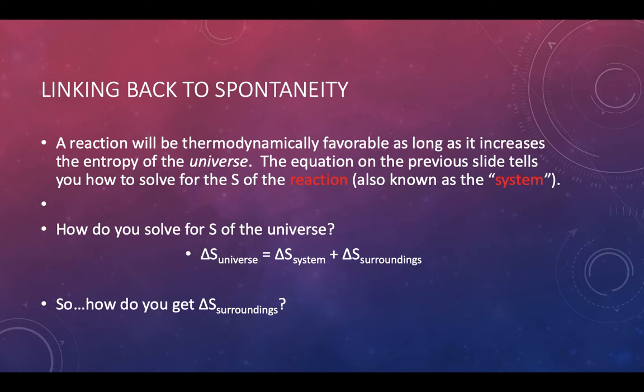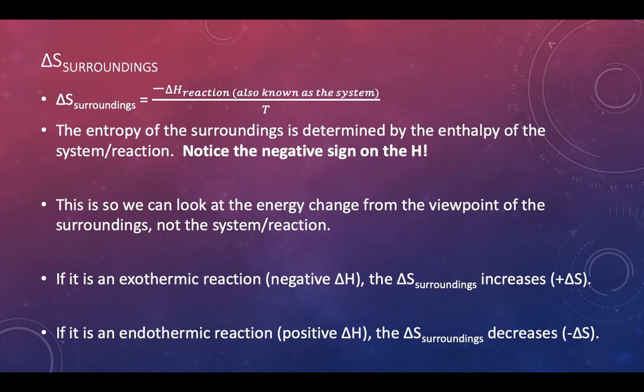So how do you get the delta S of its surroundings? You take the delta H of the reaction, delta H of the system, same thing. You flip the sign on that delta H of the reaction and divide it by the temperature at which the reaction was taking place.